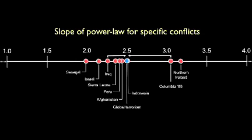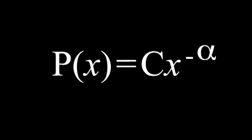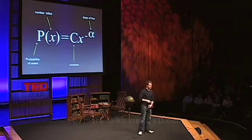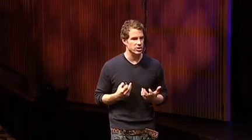We found that not only were the distributions these straight lines, but the slope of those lines clustered around a value of alpha equals 2.5. And we could generate an equation that could predict the likelihood of an attack. The probability of an attack killing X number of people in a country like Iraq is equal to a constant times the size of that attack raised to the power of negative alpha, where negative alpha is the slope of that line.